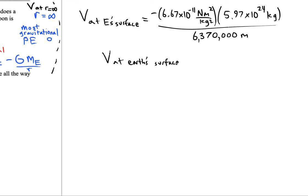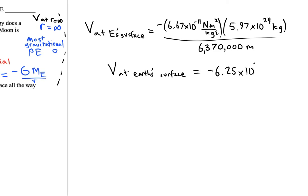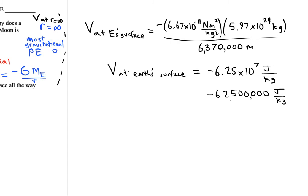The gravitational potential at Earth's surface is negative 6.25×10⁷ joules per kilogram — a very large number. Its meaning may not be immediately clear, so let's calculate some other potentials as well to put it in context.